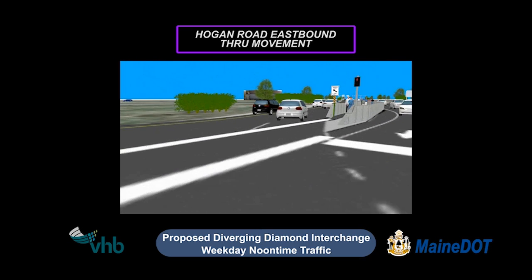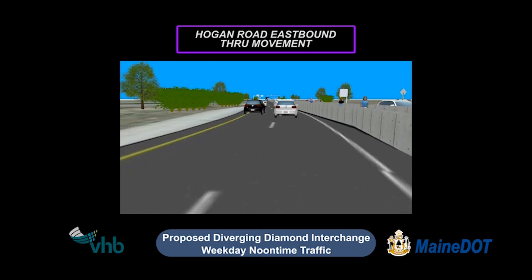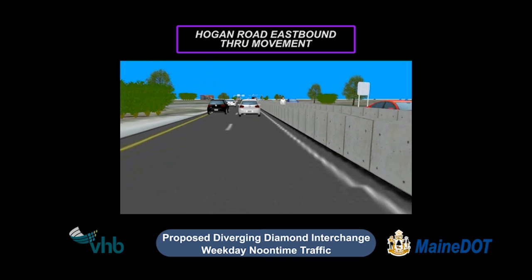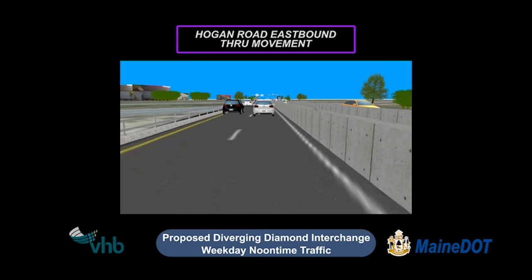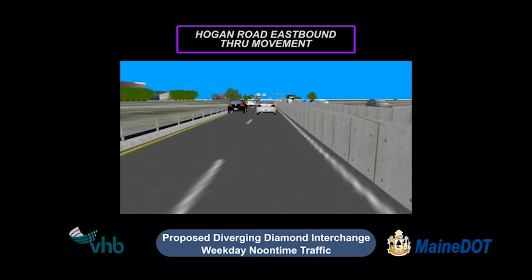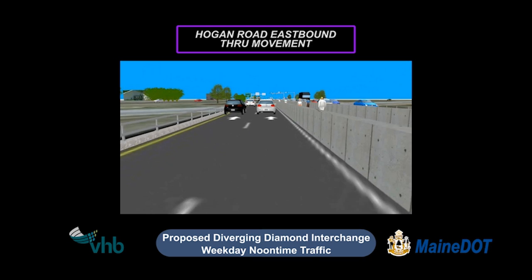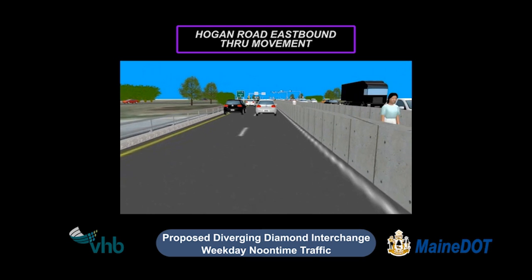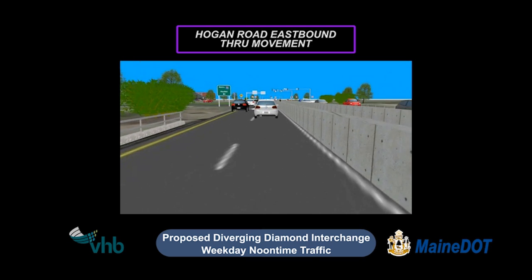The curves on the approaches to the crossovers minimize speeding and help to prevent severe crashes. The protected pedestrian and bicycle path in the median offers safe access to the commercial and recreational attractions for college students, tourists, and others.